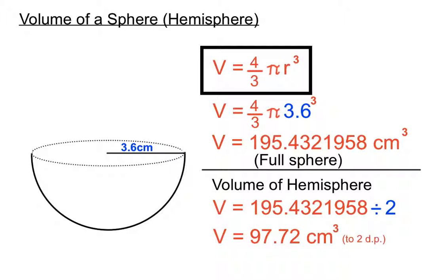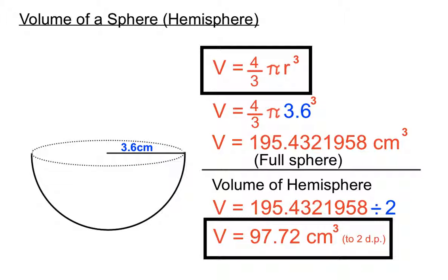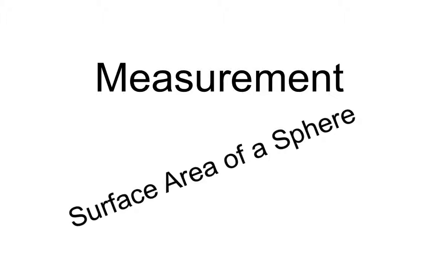We have cubic units once again. So pretend it's a full sphere, use the normal calculation, then divide by two and you'll get the volume of the hemisphere. That's the volume of a sphere and a hemisphere — hope that helps! peterblakemaths.com, catch you next time.